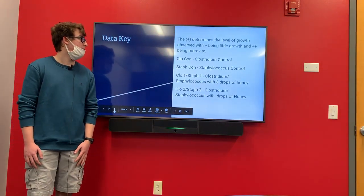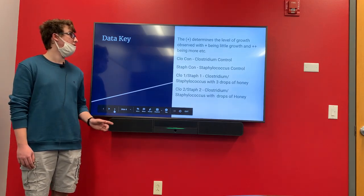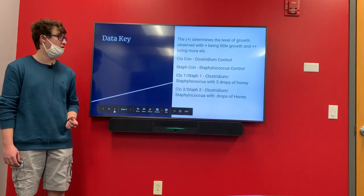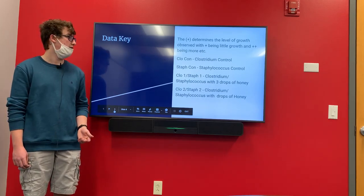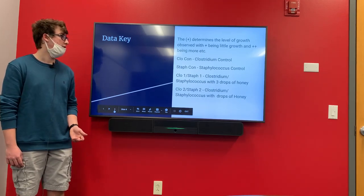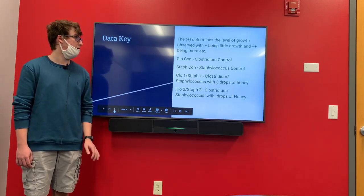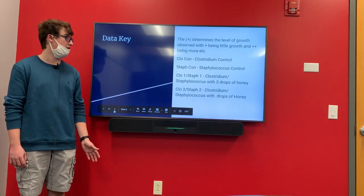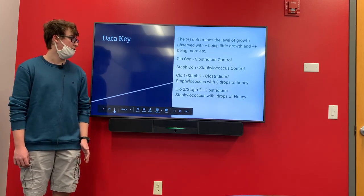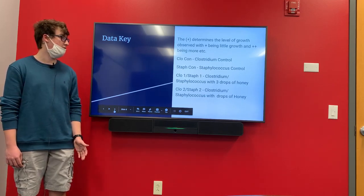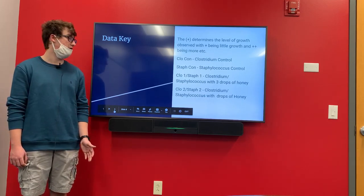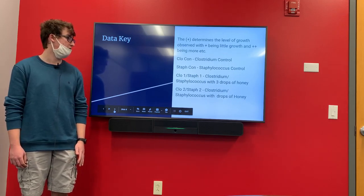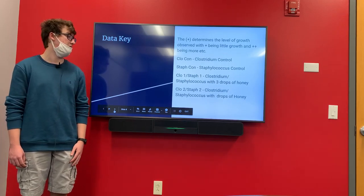For the data key, the plus sign determines the level of growth observed — one would be a little bit of growth, two would be more, and three would be a lot, and so on. 'CloC' is my abbreviation for Clostridium control and 'StaphC' is Staphylococcus control. Clo1 and Staph1 would be the Clostridium and Staph with three drops of honey, and then Clo2 and Staph2 would be the bacteria with six drops of honey.